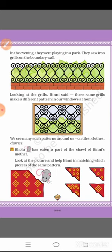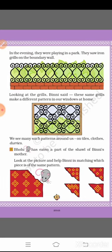We see such patterns all around us — on tiles, clothes, and durries. They saw patterns on tiles, on clothes, and on grids. Then next, Bholu — Bholu is the mouse of this story.